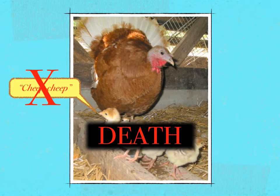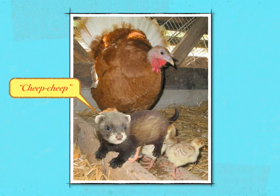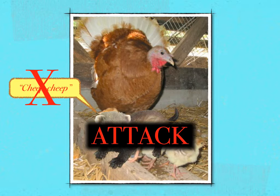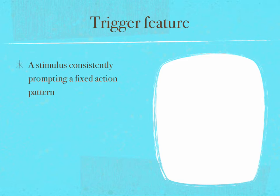How can we be sure that the cheap-cheap noise alone triggers this mothering behavior? We can introduce the turkey mother's natural enemy, the polecat. Experimenters found that even a stuffed replica of a polecat received an immediate and furious attack from a turkey mother. However, when the same stuffed replica carried a small recorder playing the cheap-cheap sound of baby turkeys, the mother not only accepted the oncoming polecat but gathered it underneath her. When the machine was turned off, the replica was viciously attacked. Evidently, the trigger feature prompting consistent mothering behavior is nothing more than the cheap-cheap sound.